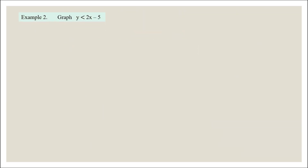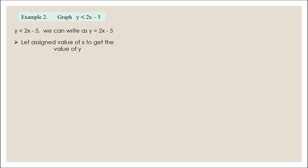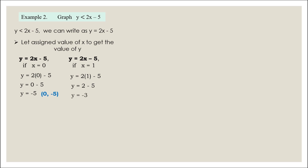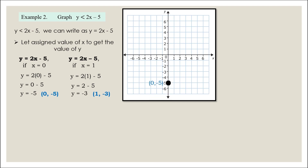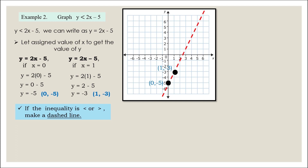Let us have another example: Graph y less than 2x minus 5. We can write y less than 2x minus 5 as y equals 2x minus 5. Let us assign values of x to get y. If x is 0, y is negative 5, so we have (0, −5). If x is 1, y equals negative 3, giving the point (1, −3). Let us graph — at least two points to create a line. Since the inequality is less than, make a dashed line.